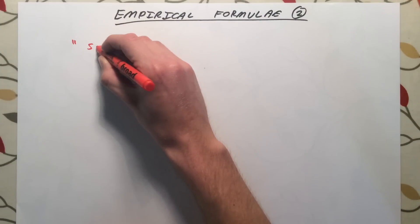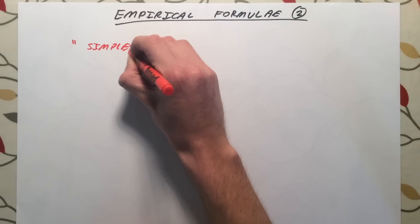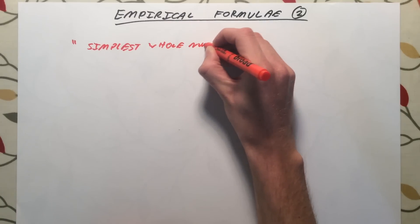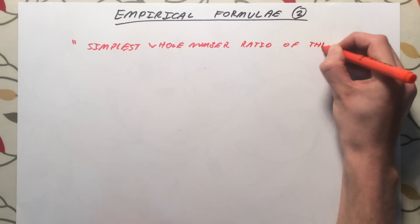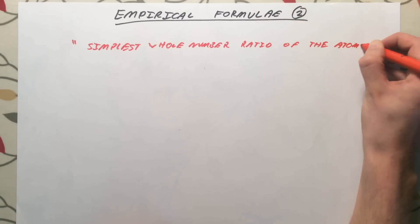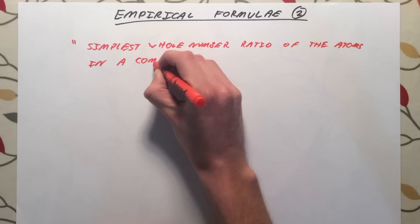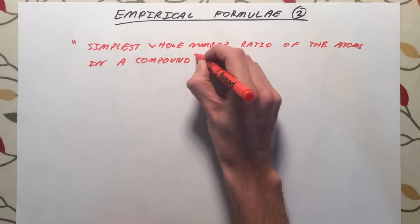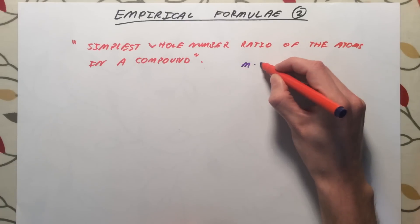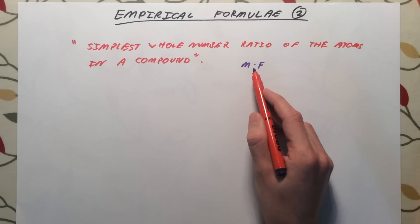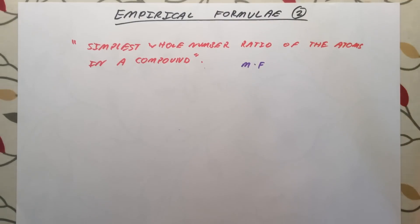So to start with, a definition. Empirical formula means the simplest whole number ratio of the atoms in a compound. If we write out some molecular formulae, which actually tell us the exact number of each atom there is in a compound, and then compare that to the empirical formula, we can see quite simply.